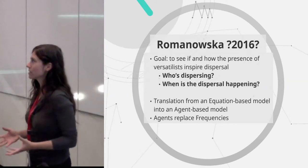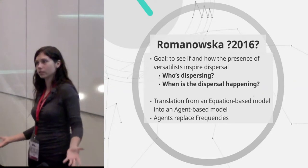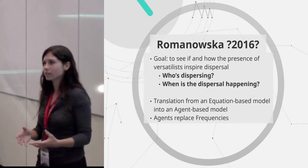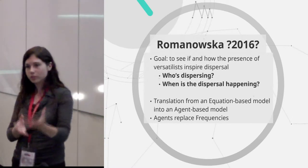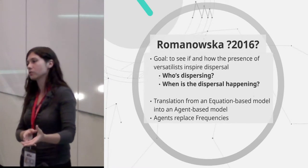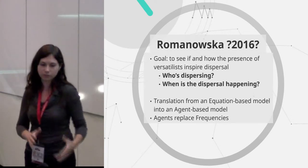And that's why I decided to rewrite it into an agent model. So the agents would replace the frequencies. And then I could ask things that the frequency model cannot ask, for example, who is dispersing or when is dispersal happening on the kind of local level? Or do you need versatilist individuals in your group in order to be able to disperse? Or are you actually better off if you don't have them?